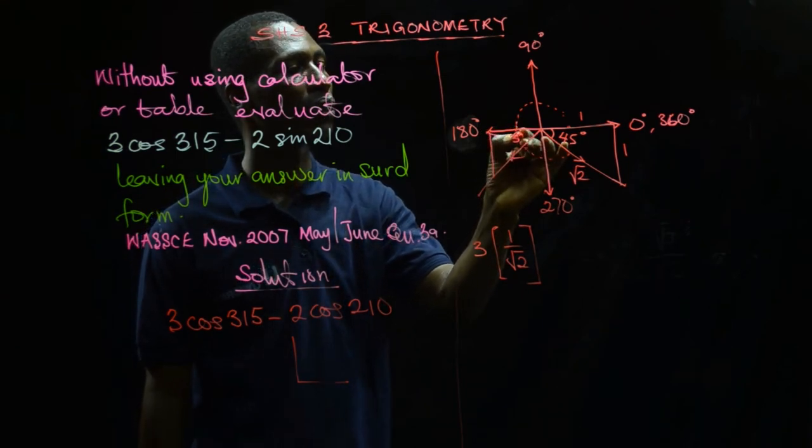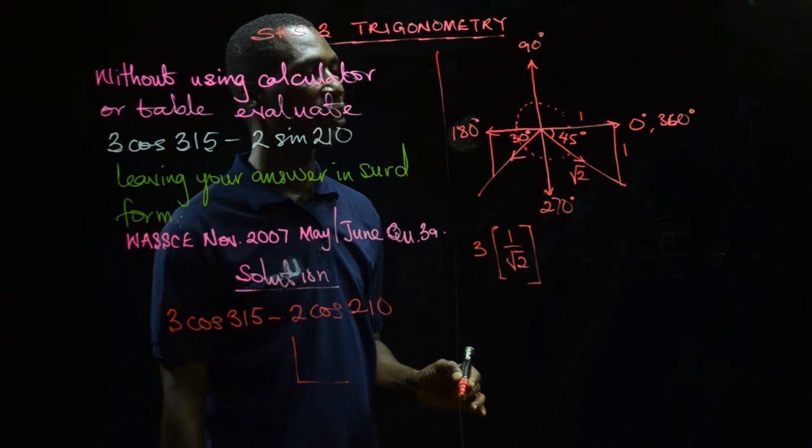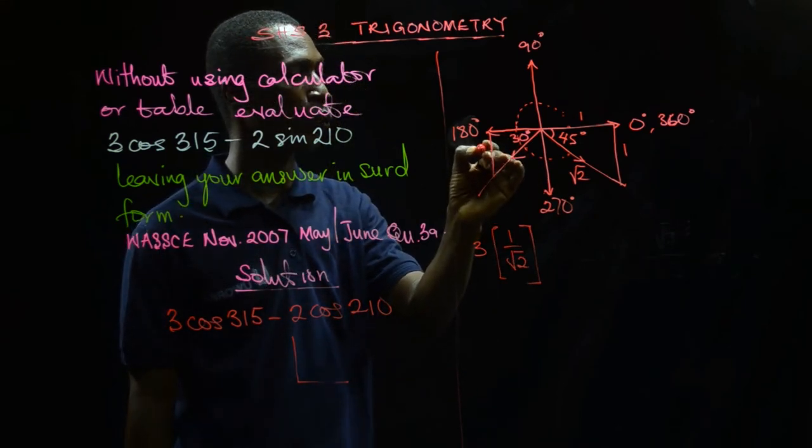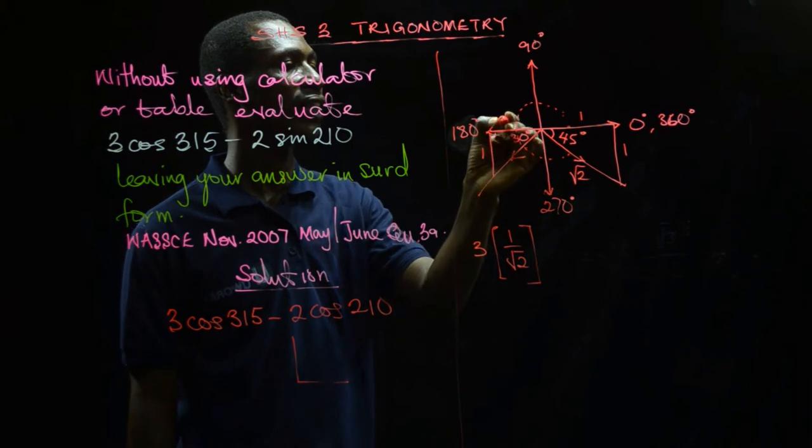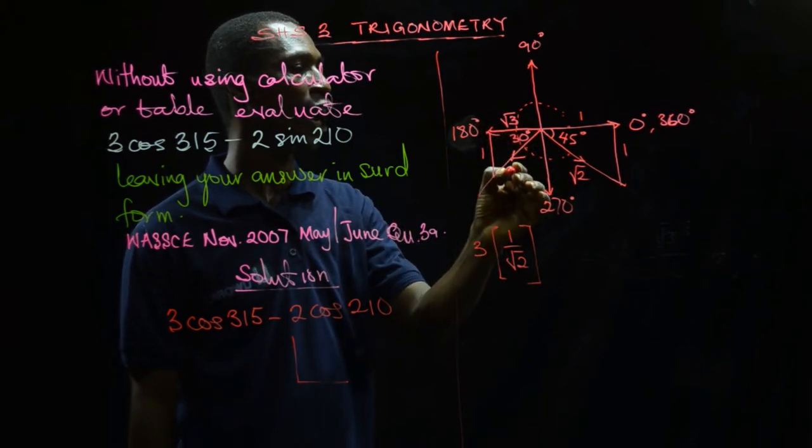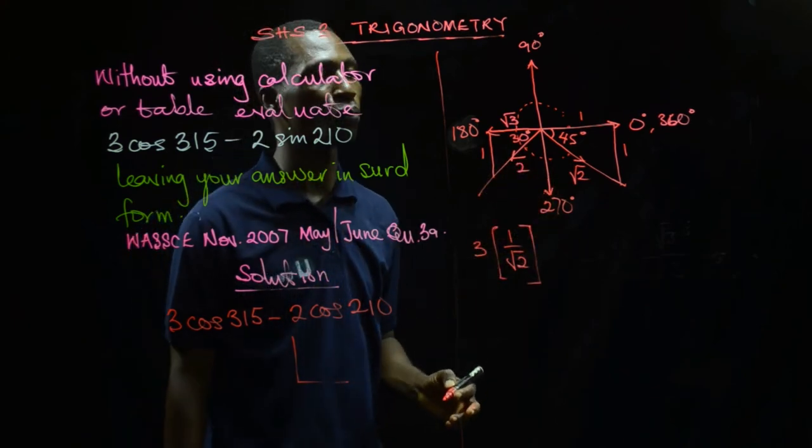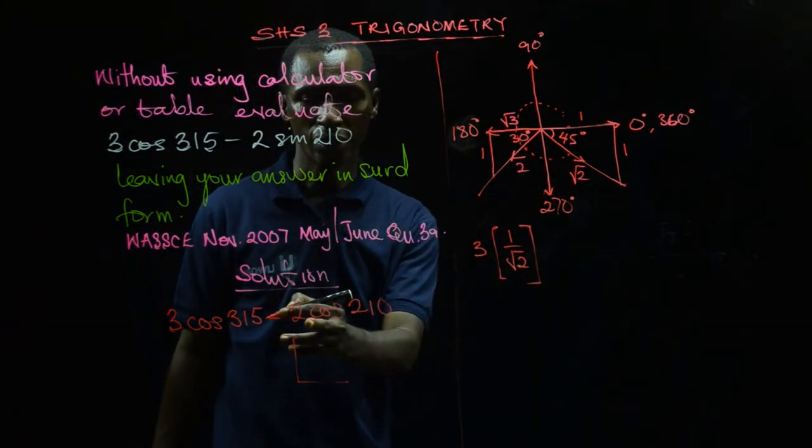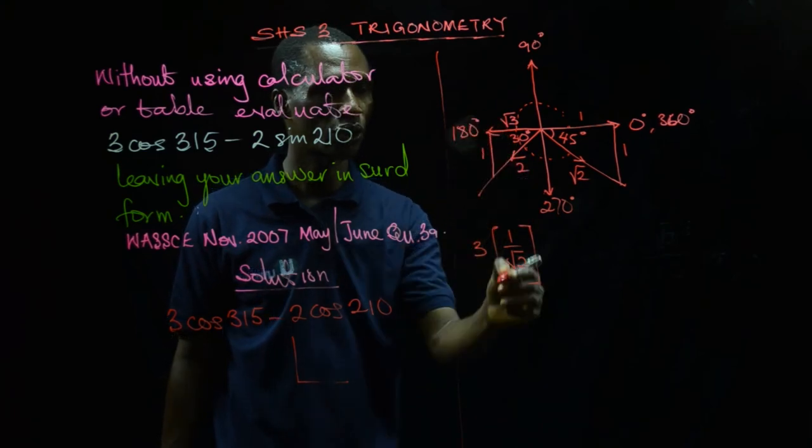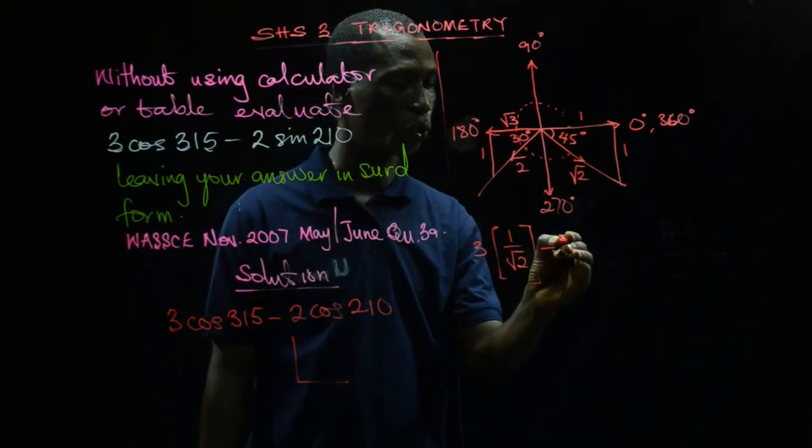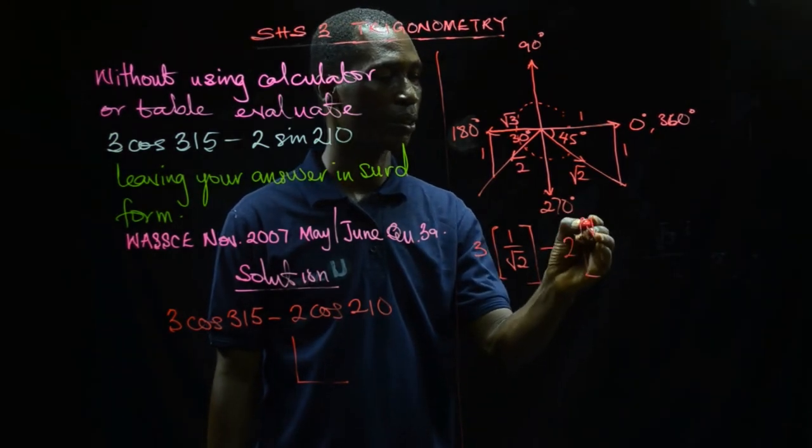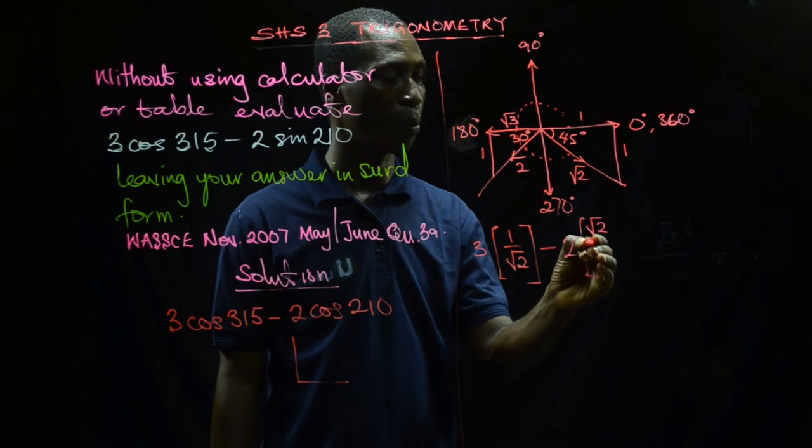If here is 30 degrees, I know the opposite of 30 degrees is 1, the adjacent is √3, and the hypotenuse is 2. So we have minus 2, and the adjacent is √3 over hypotenuse 2.